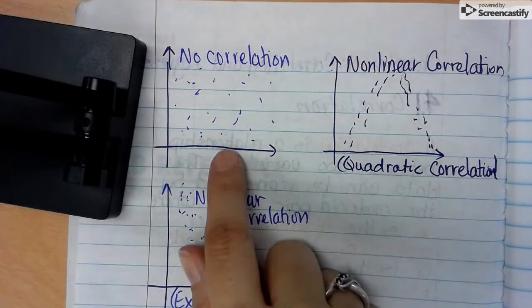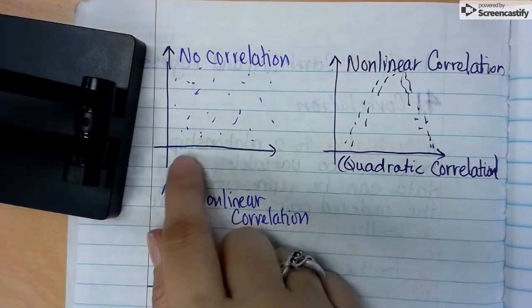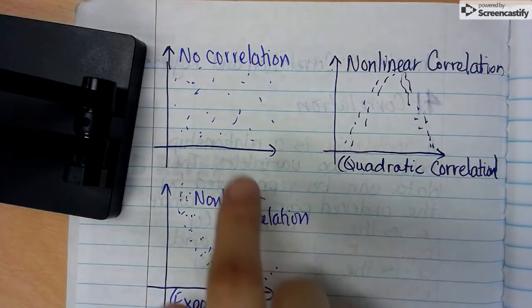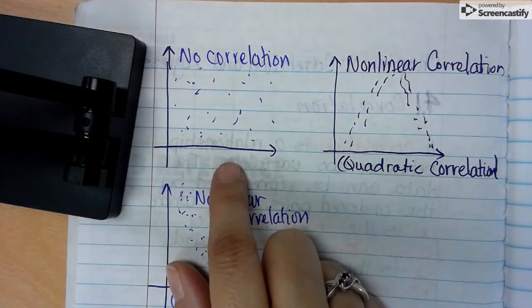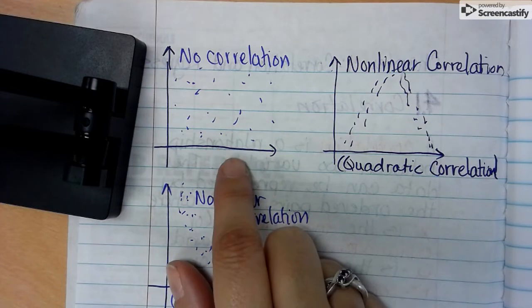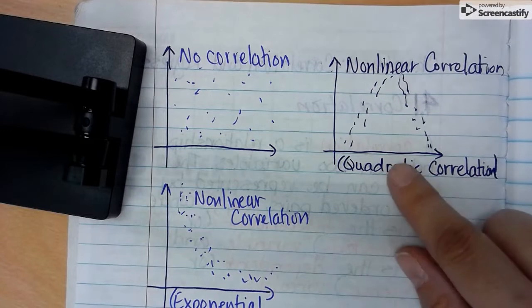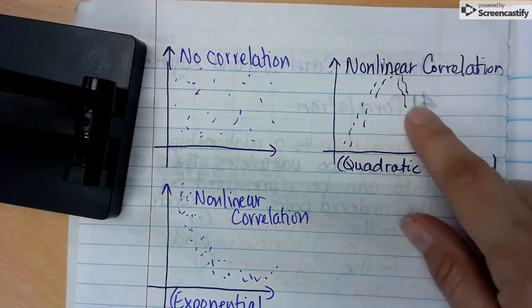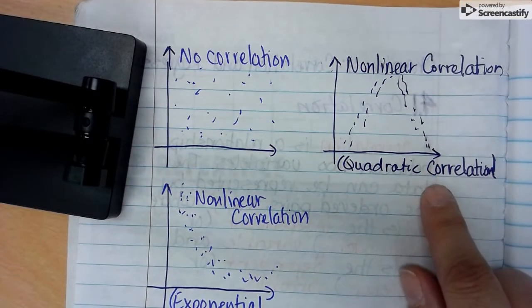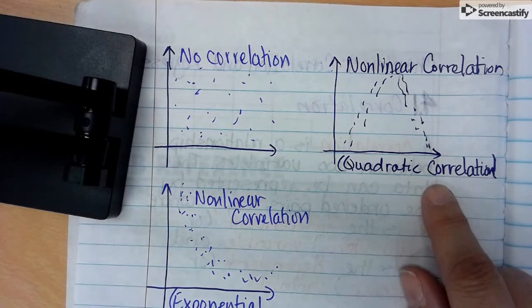If the dots appear to be just going all over the place and there's no actual pattern, this is called no correlation. There is no increase or decrease in the y or x, it just appears to be random.